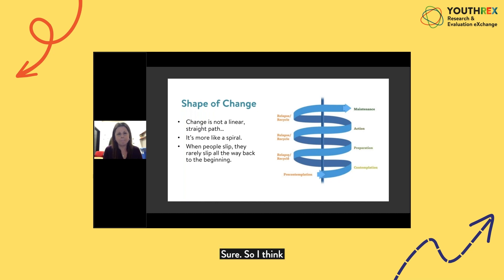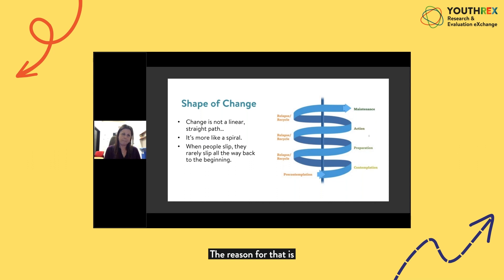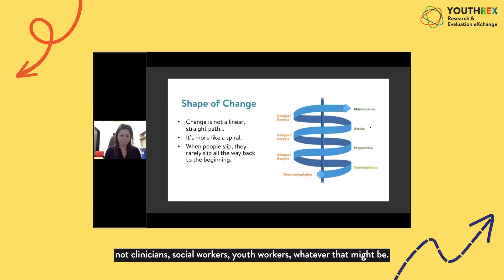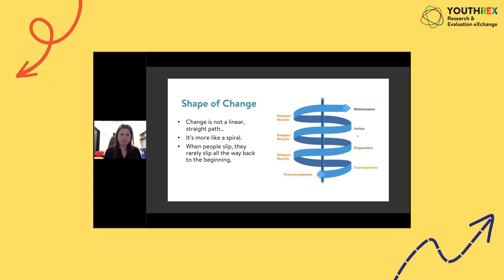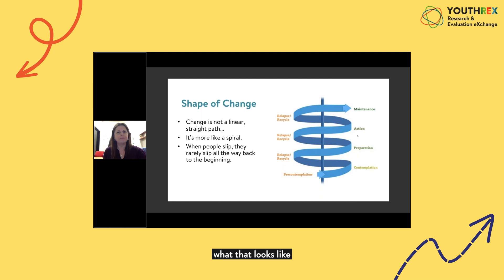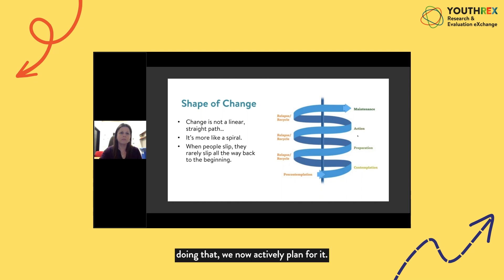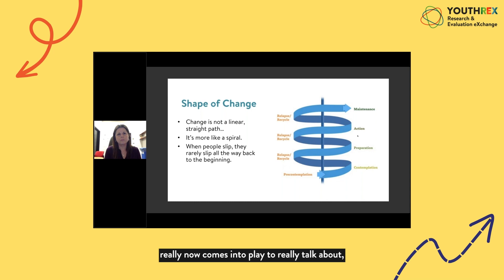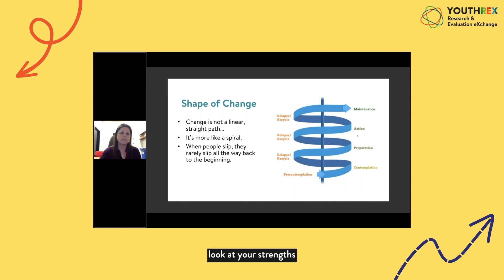Miles discusses relapse as one of the trickiest parts for New Beginnings to accept as an organization. As clinicians, social workers, and youth workers, it's not easy to accept that people are going to regress or relapse down a stage. It took New Beginnings a while to sort that out and accept that it's okay — it's just part of the process. Now, after a couple of years of experience, they actively plan for it. They build rapport and strengths from earlier stages to talk through a relapse: 'okay, this didn't work out — now let's move forward, look at your strengths, and see what knowledge we've gained.'